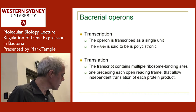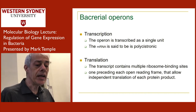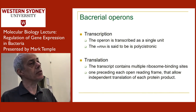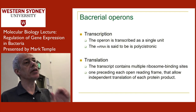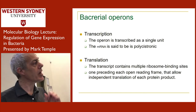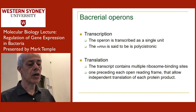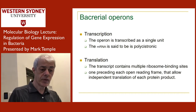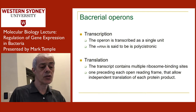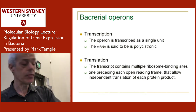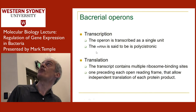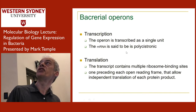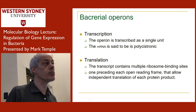In bacteria, you get clusters of genes which are regulated by a single promoter — you don't have that in eukaryotes. We have these things called operons in bacteria. An operon is a collection of genes attached to a single promoter.